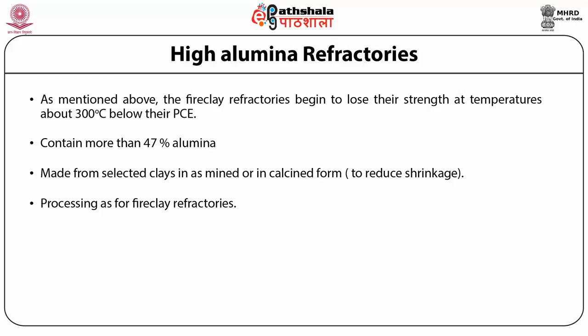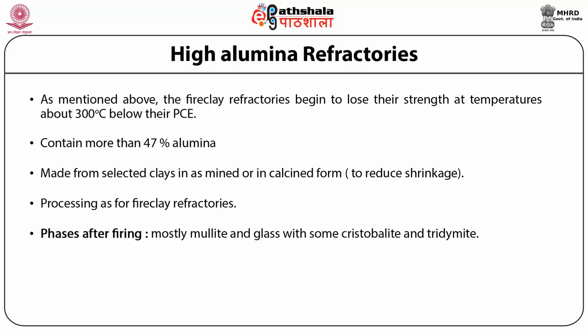To prepare the refractory materials, a mixture of the available raw materials is selected to yield the desired composition and properties. The crushed and graded material is mixed with some amount of plastic clay, pasted into desired shapes and fired. The phases present after firing are mostly mullite and glass with some amount of corundum, cristobalite and possibly some tridymite, depending on the time and temperature of firing. The properties such as slag resistance, strength and constancy of volume depend on the phases and their amounts.